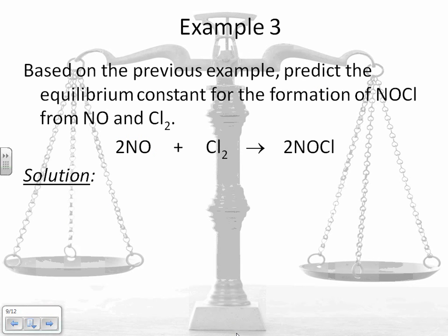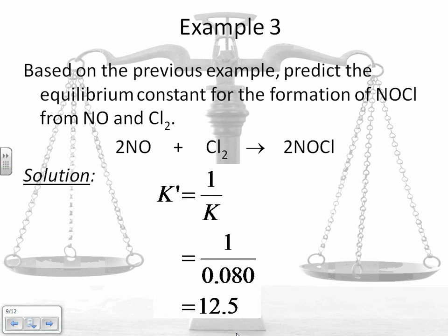If we go to this example, it says, based on the previous example, predict the equilibrium constant for the formation of NOCl, so the reverse reaction. So in this case, when we go through, you can set up an ICE chart again and use the data. But it's a lot faster if you use this K prime rule. So K prime is 1 over K. So I take 1 divided by my answer from the last slide, and I get 12.5. Done.